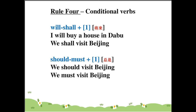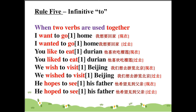We should visit Beijing. We must visit Beijing. Rule number five — the fifth method — is the infinitive 'to.'